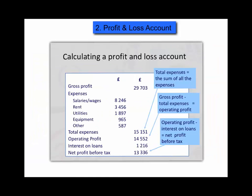The second part of the income statement is known as the profit and loss account. This account is laid out straight underneath the trading account. To get the true final net profit figure we have to take away our expenses from our gross profit of £29,703. The day-to-day costs of running the business would be items such as salaries and wages, the rent for the shop or the factory.